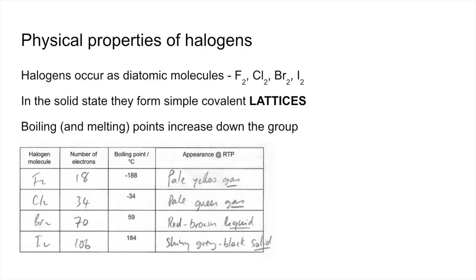Fluorine is a pale yellow gas, chlorine is a pale green gas, bromine is a red-brown liquid, and iodine is a shiny grey-black solid.